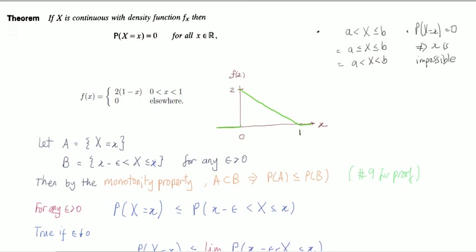Say that a random variable x follows a normal distribution. You want to find the probability that x takes the value 2. What's the answer? It's 0.